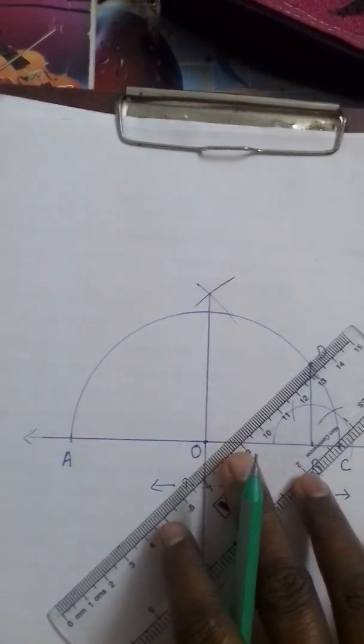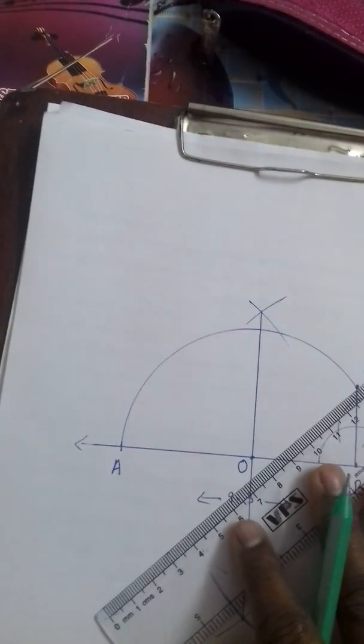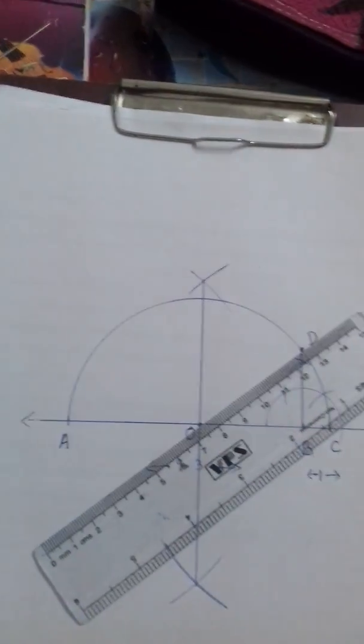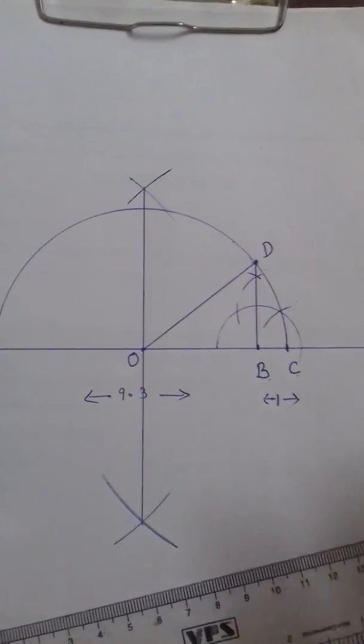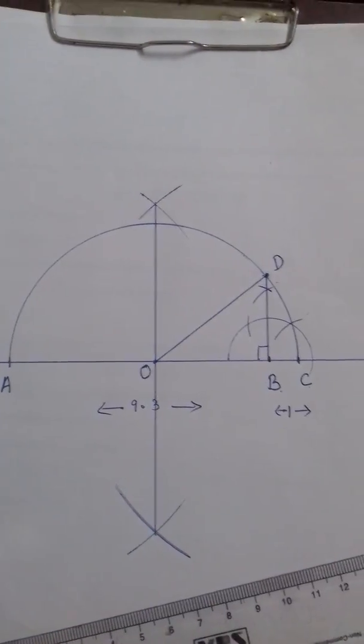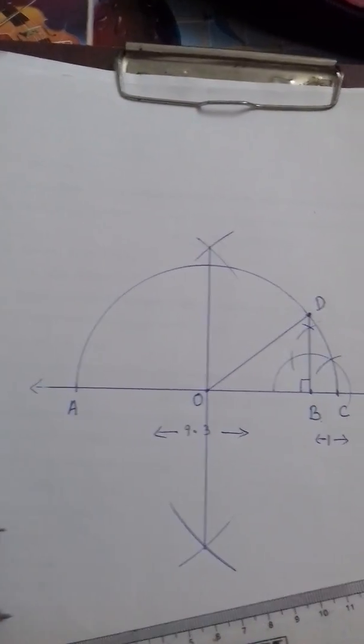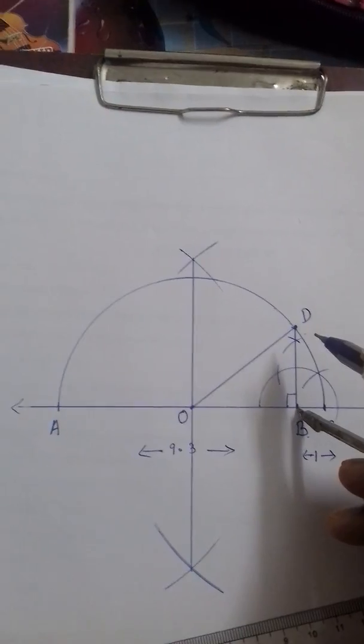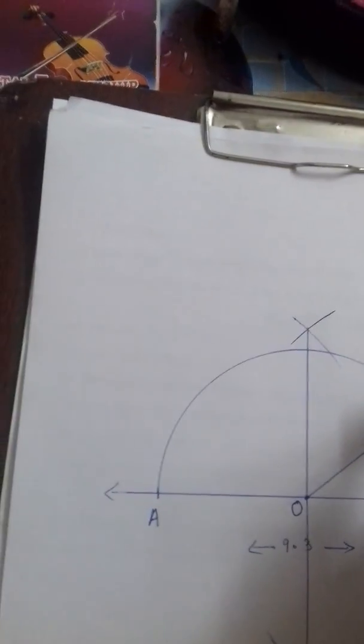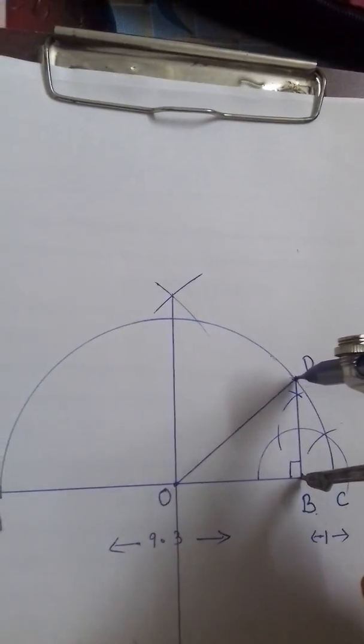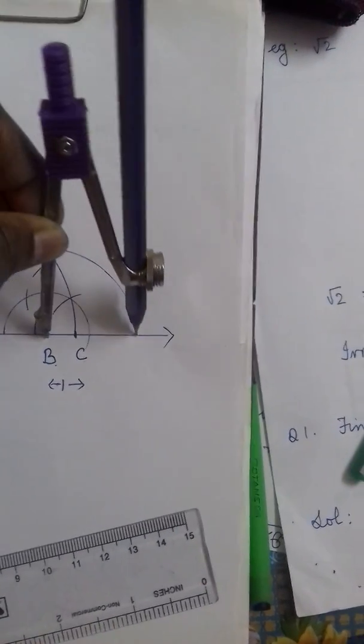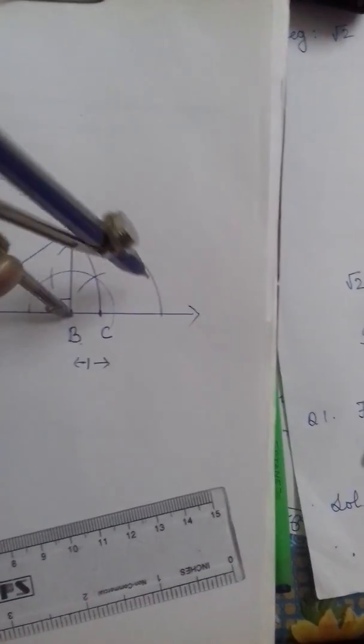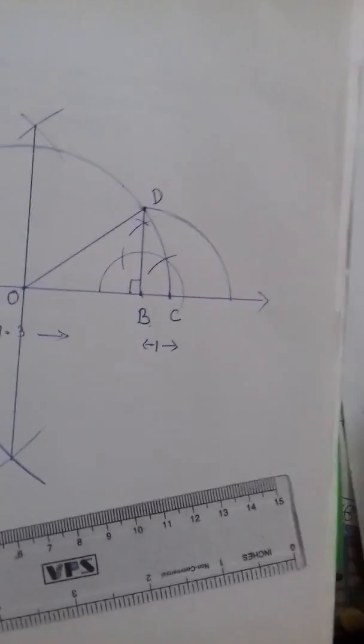Now next step is to join OD. So we have joined OD. Now we have got a right triangle here. Now geometrical meaning I will interpret. Before that let me complete the construction. With B as centre and BD as radius, draw an arc which meet the number line at this point. And let that point be P.